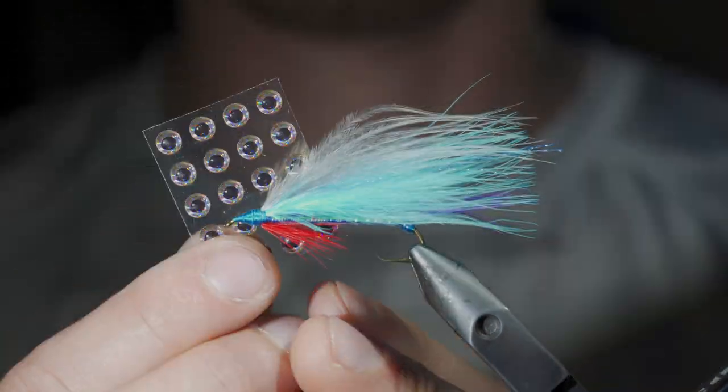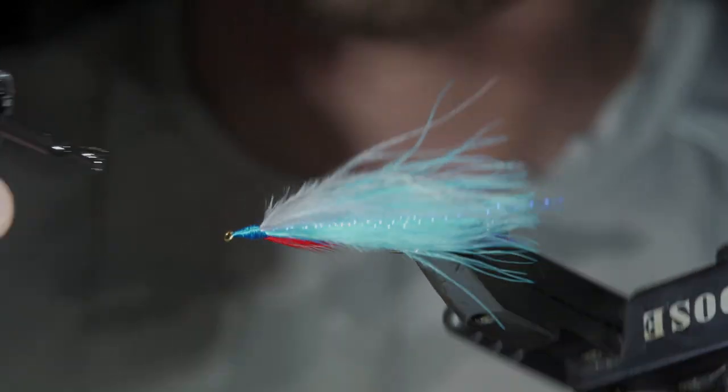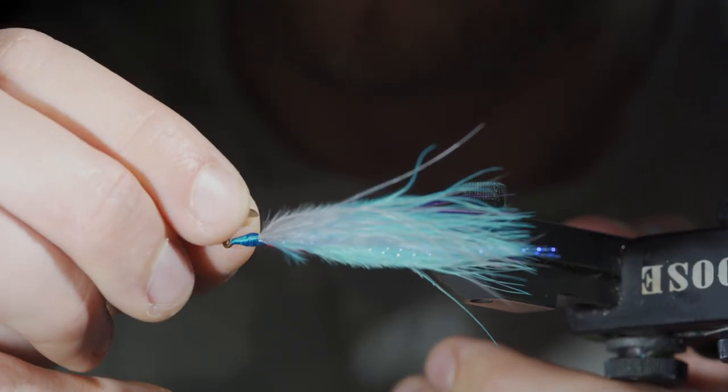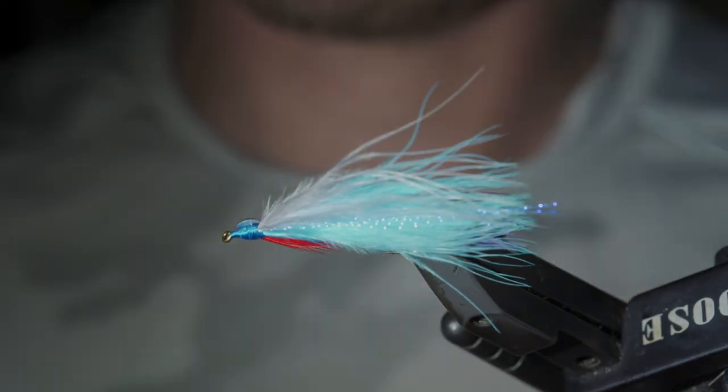Snip your thread free and grab some eyes. We'll paint over the side of the fly with some super glue, placing our eye in place. Repeating this process for the other side.